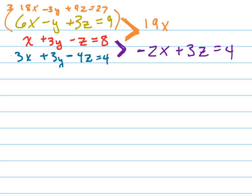19x. The y's are gone. Plus 8z equals 35.